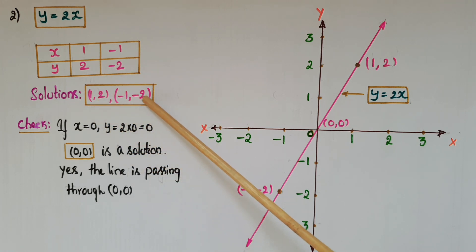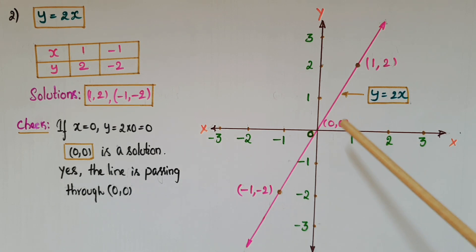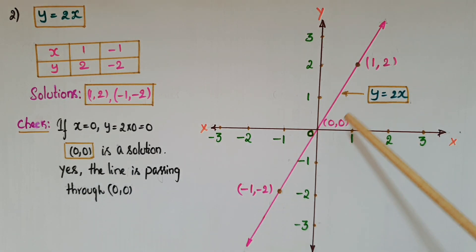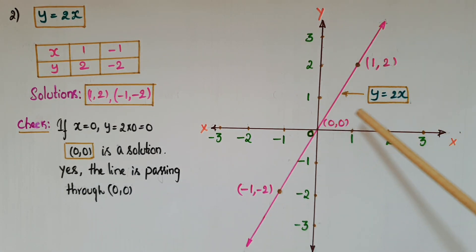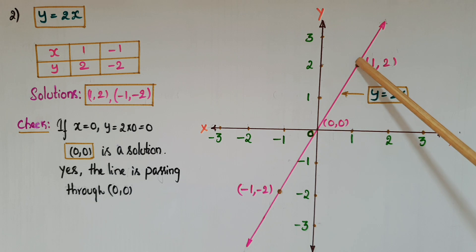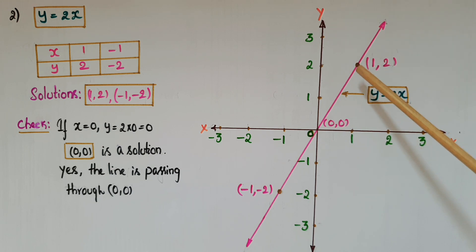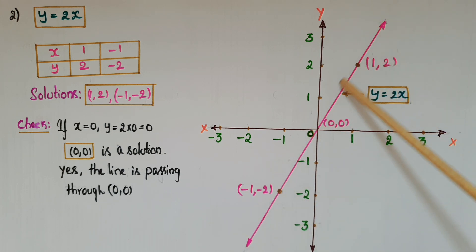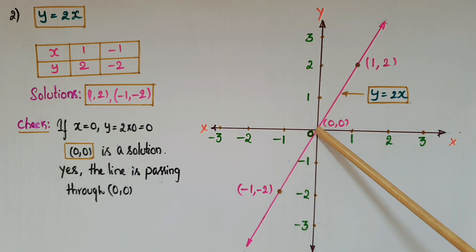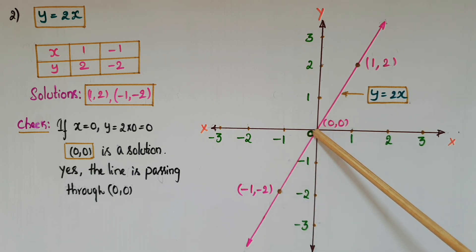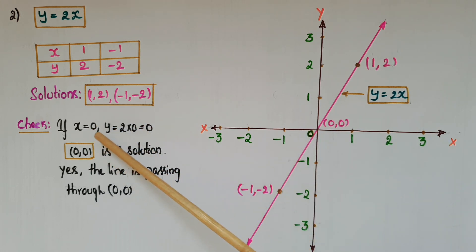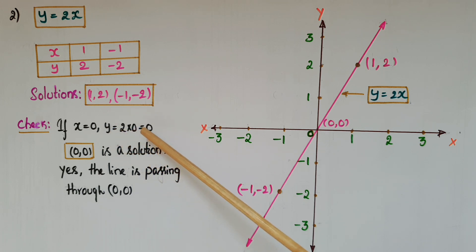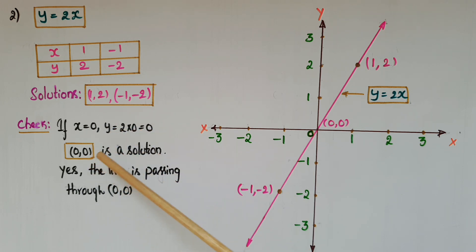Mark these two points on the graph. (1, 2) is here — 1 and 2, this is the point. And (-1, -2) — this is the point minus 1 comma minus 2. Then join these two points. This line is going through (0, 0). You can check: if x is equal to 0, then y is equal to 0, so (0, 0) is a solution and the line passes through the origin.